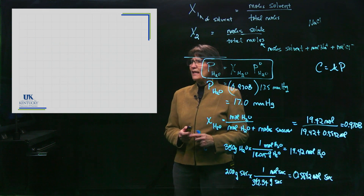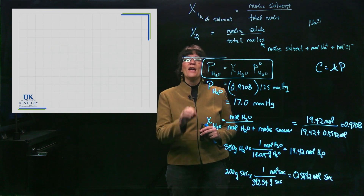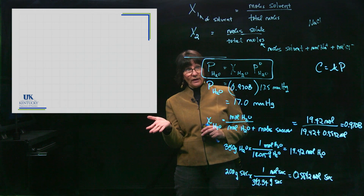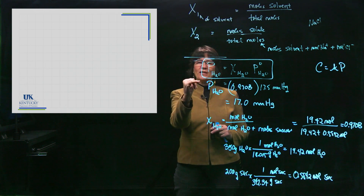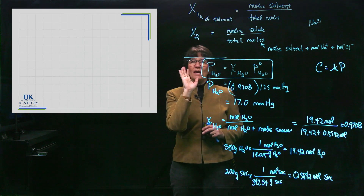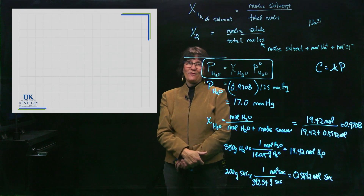That is the first colligative property — vapor pressure lowering. We use Raoult's Law to calculate how it changes, and we have three more colligative properties to consider after this one.